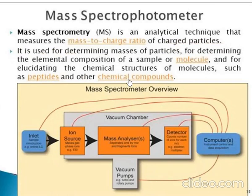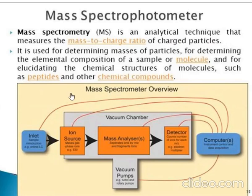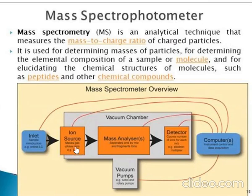Mass spectrometry is an analytical technique used to measure the mass-to-charge ratio of charged particles. It is used for determining masses of particles, determining the elemental composition of a sample or molecule, and for elucidating the chemical structure of molecules such as peptides and other chemical compounds. The sample is introduced and ionized to generate gas-phase ions, which pass through a mass analyzer and then into a detector.